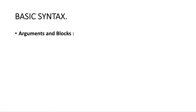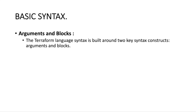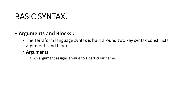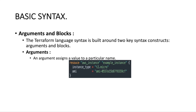The two key constructs are arguments and blocks. We'll first talk about arguments. An argument can be thought of as a variable where we have a variable name and we can assign a value to it. For example, here I have defined my resource block — whatever you see on the left-hand side, like instance_type and ami, that's the argument name.